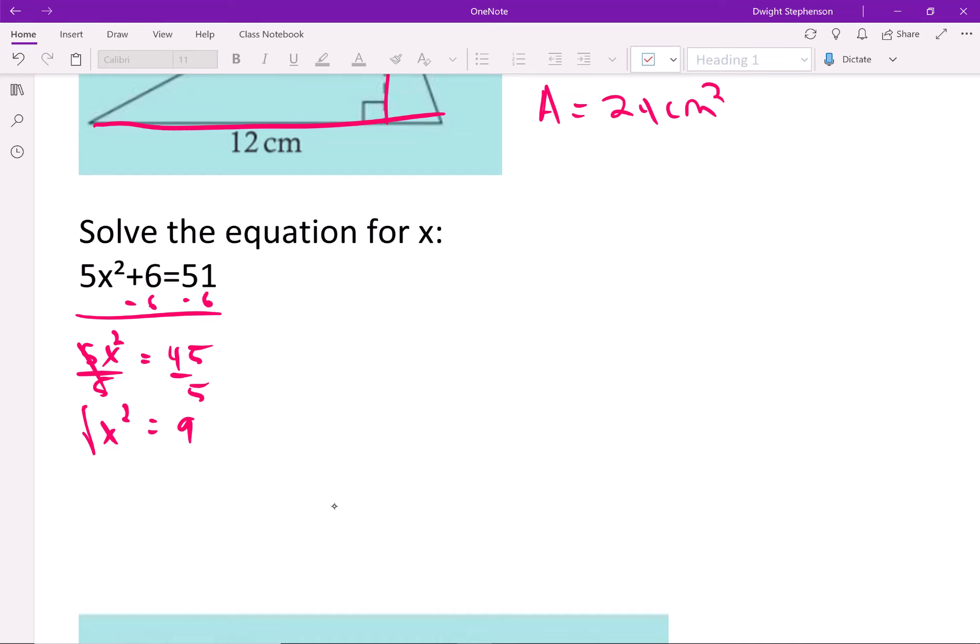To get rid of the square root symbol we should take the square root of both sides. Or to help you think about why there's two answers to this, I'll get this answer and we'll talk about it. The square root of 9 is 3.